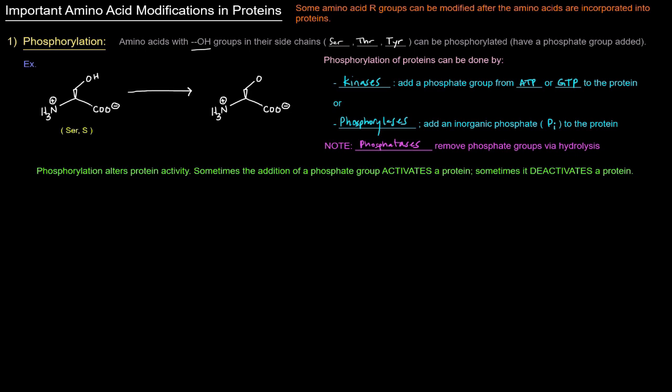Here as an example we've got serine and it has its OH group right there and that OH group is what allows serine to be phosphorylated. Upon the addition of a phosphate group, whether it comes from ATP or GTP or even an inorganic phosphate, we end up with phosphoserine with an OPO3 2 minus. If this serine was part of a protein that would alter that protein structure. This can also occur for threonine's OH group or tyrosine's OH group.